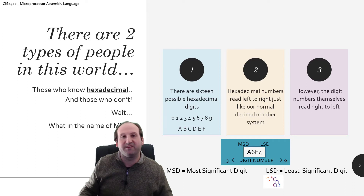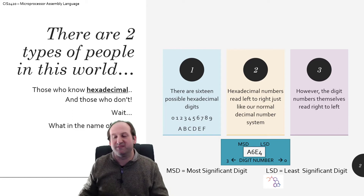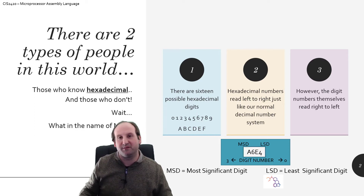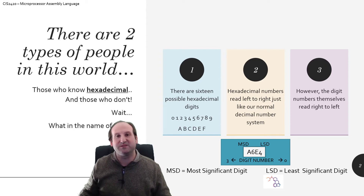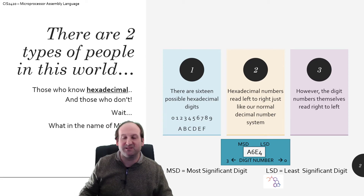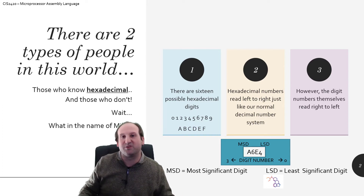Just like every other number system — binary, decimal, octal — we read the digits left to right. The most significant digit is on the left-hand side, and the least significant digit is on the right-hand side. But when we're talking about digit numbers themselves and asking what's digit 0, we start from the right and work our way to the left, as this chart A6E4 shows. The most significant digit is that A, because that's a large number we're multiplying there, and the least significant digit is the 4, because that's the 1's digit.